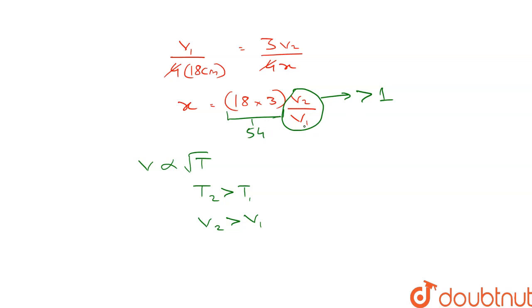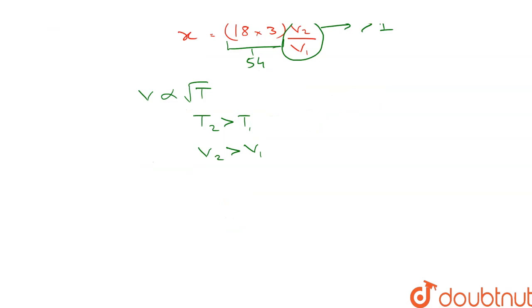Therefore, 54 multiplied by something greater than 1 is greater than 54. Therefore, we can say that the column length x is greater than 54 cm.